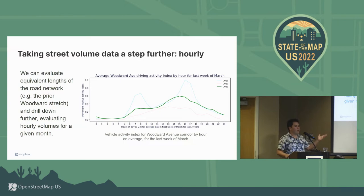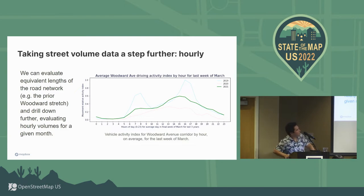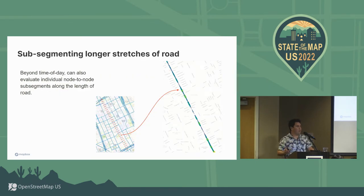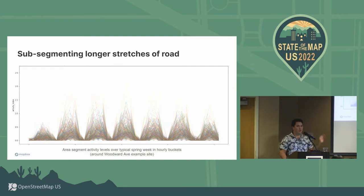This allows you to take Woodward — instead of just one AADT value from MDOT — and actually index it in our buckets and see the trend line. In 2019 you see full AM and PM peaks, but in 2020 those peaks disappear, and in 2021 the peaks are coming back. And not only can you do that, you can do it for every single road segment from every intersection — something you couldn't do with MDOT data. This is every road segment in the area around Woodward, showing typical traffic distribution to the hour for a given week.